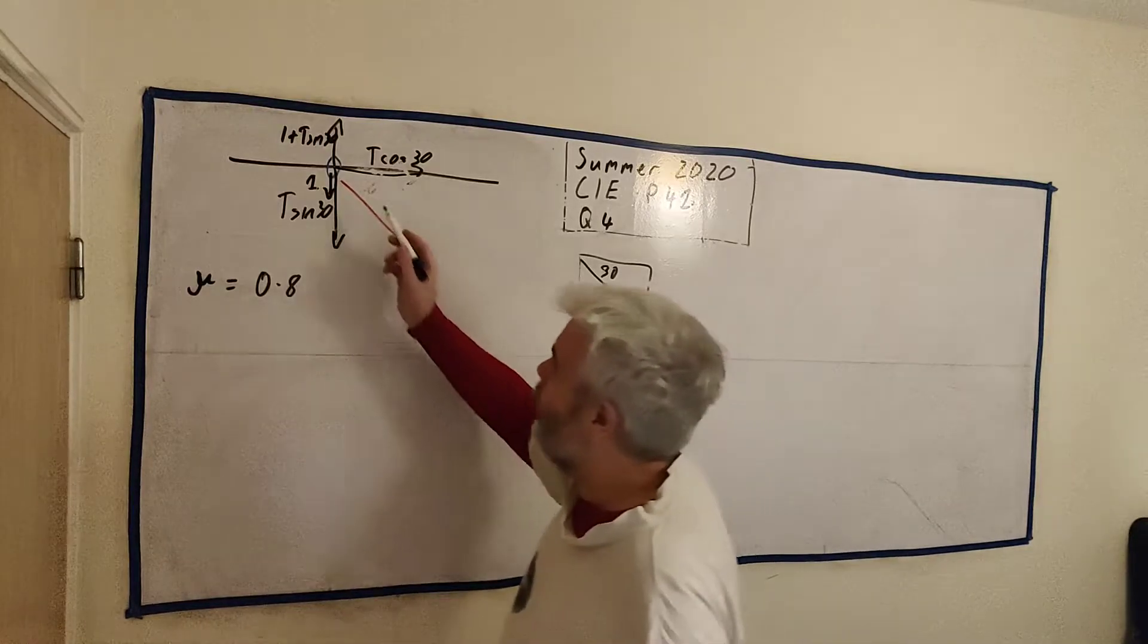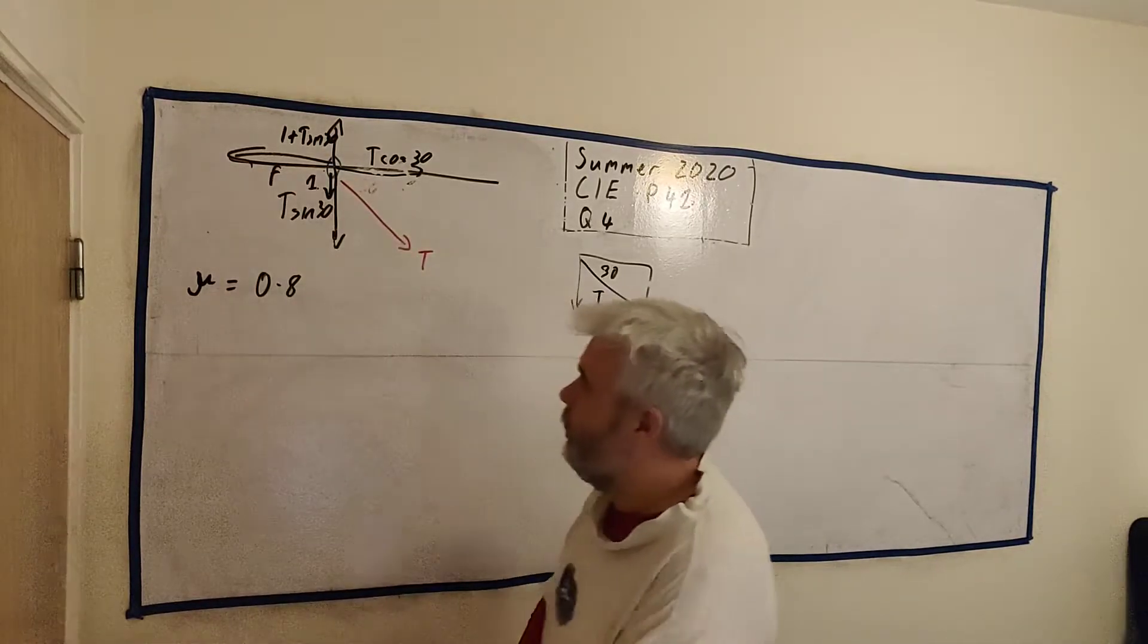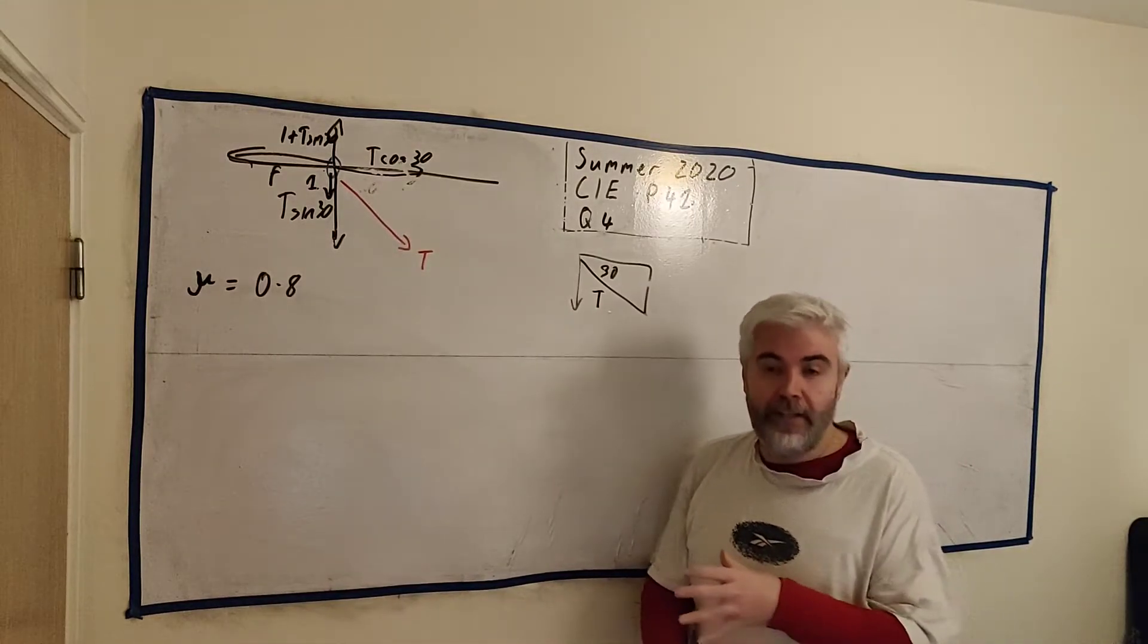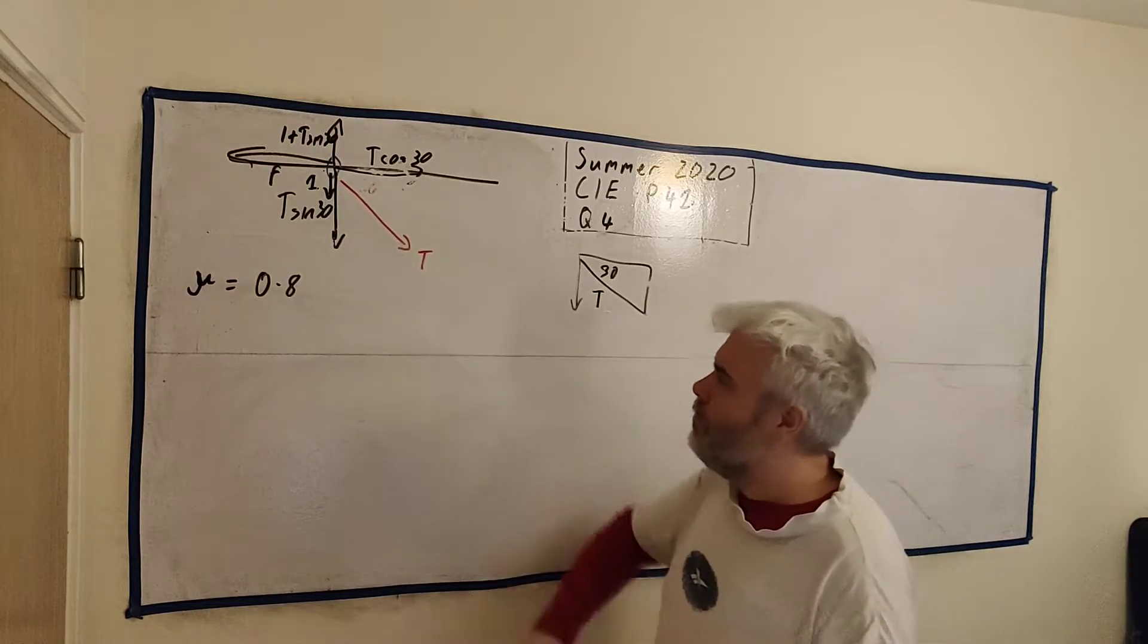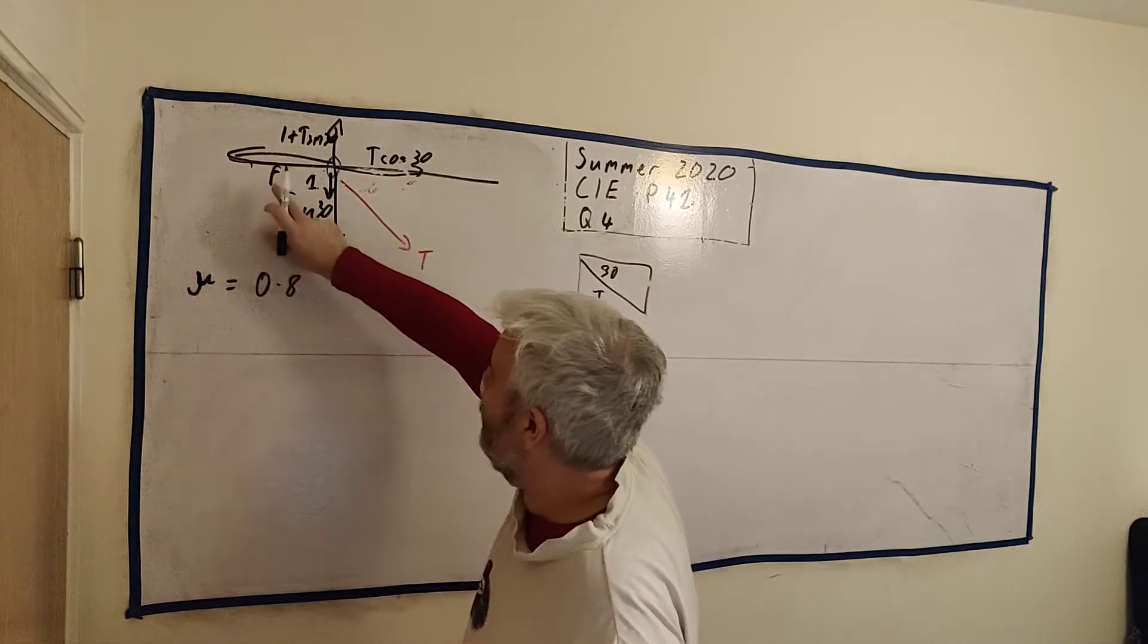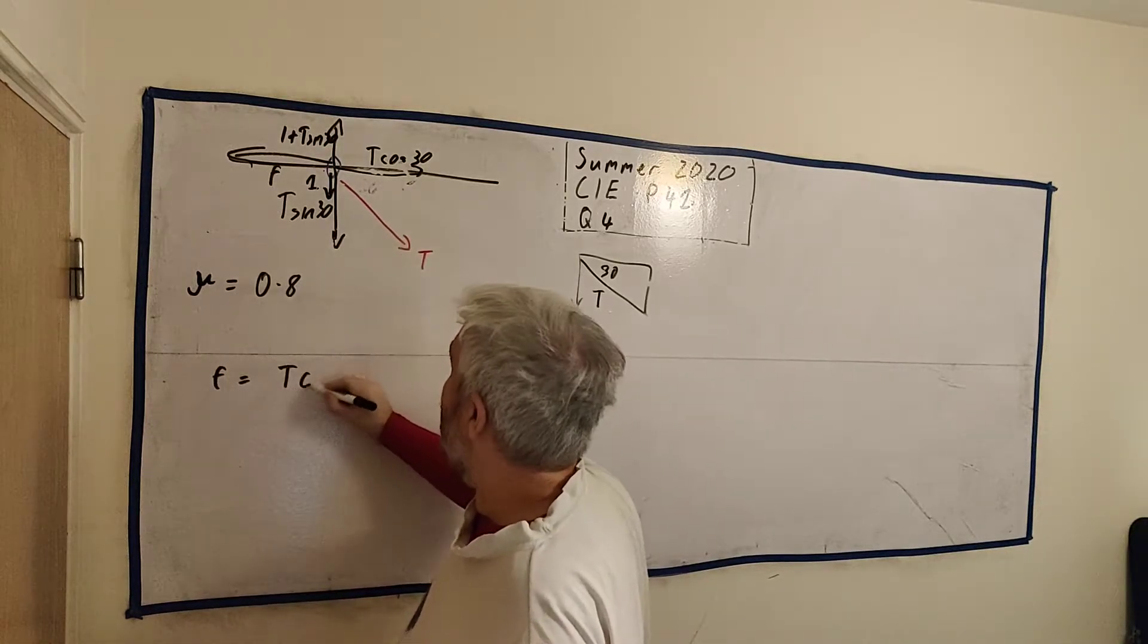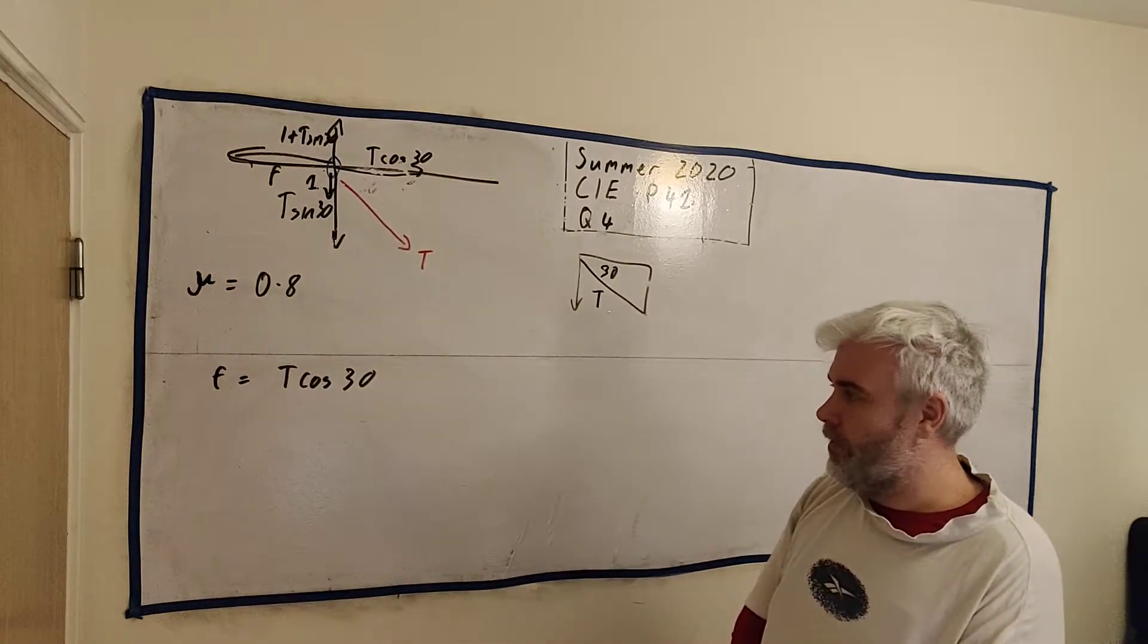And there's one more force, the resistance, going this way. Let's call that F. For now. And if the ring's not moving, they're asking us to find T such that it's not moving. All these must add up. So I already talked about the up and the down. They have to match. So really now we've just got that this has to match this. So we've got F is equal to T cosine 30. That's all. That'll resolve this question.